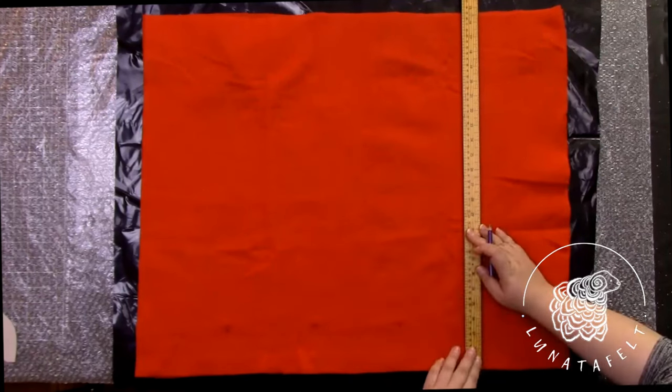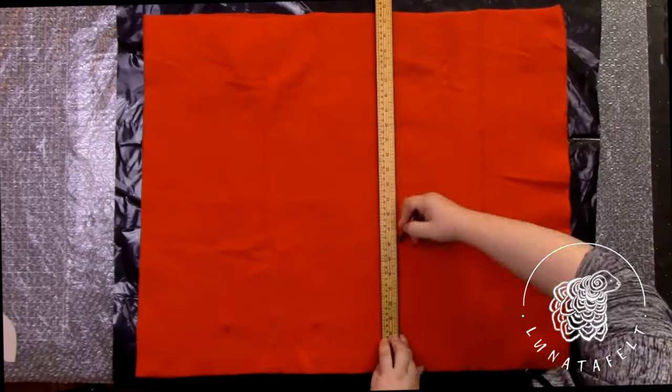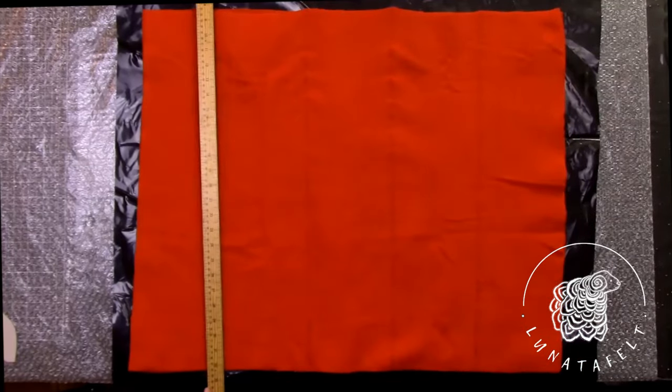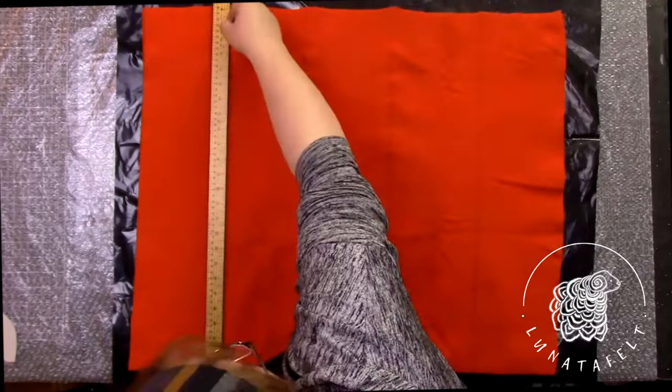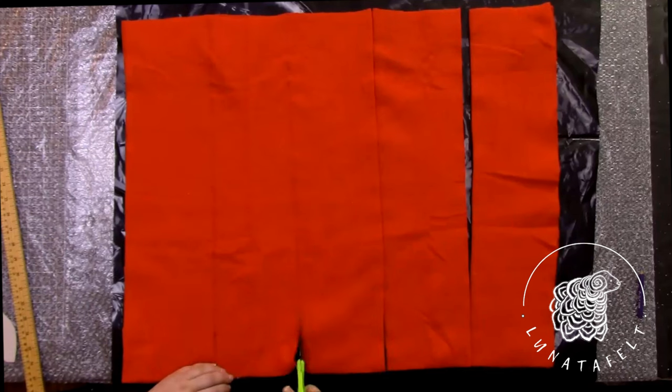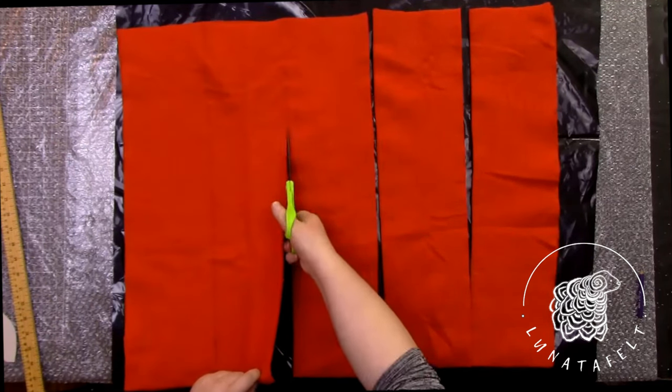We divide the pre-felt width into five equal parts, so we get five strips of 15 centimeters each. Using a large ruler and either a watercolor pencil, quilting pencil or a piece of chalk, we apply the markings. We cut the pre-felt folded in half along the marking lines. Thus, I get 10 strips 15 centimeters wide and 75 centimeters long.